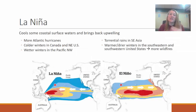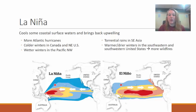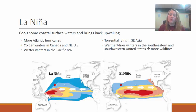La Niña is actually the opposite of El Niño. Instead of trade winds weakening and reversing, during La Niña we have extremely strong trade winds that really amplify upwelling and push a whole bunch of warm water towards Southeast Asia, leaving very cold, very nutrient-rich water off the coast of western South America. As a result, we also see more Atlantic hurricanes and much colder winters in Canada and the northeastern United States.